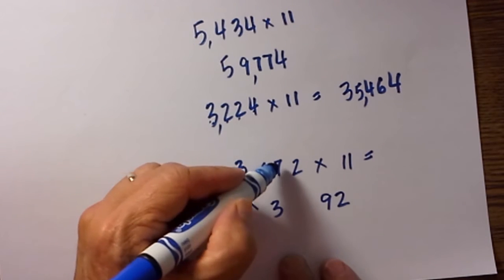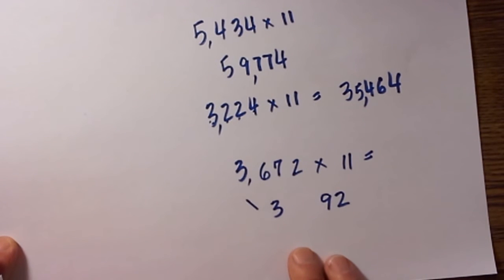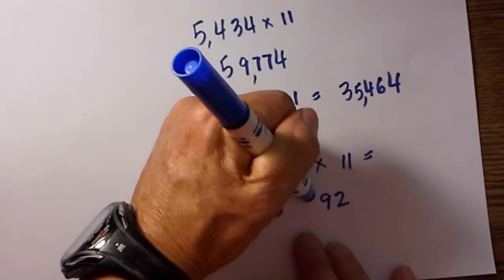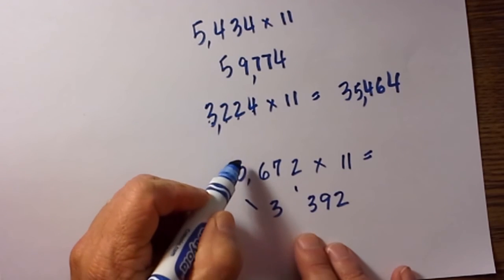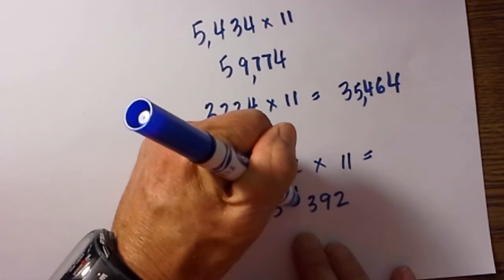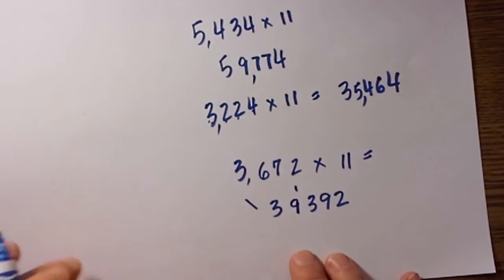Then we have 6 plus 7, which as you know is 13. Well what do we do with that number? You put the 3 and carry the 1 to this side. So now what we have is 6 plus 3, and that is 9.